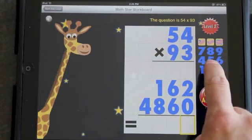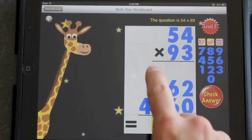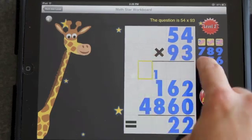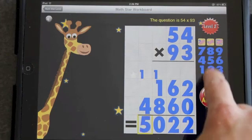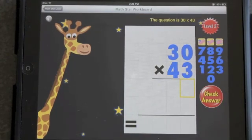Let's add that up. 2. 6 plus 6 is 12: 1, 2. 1 plus 1 plus 8 is 10: 1, 0. 1 plus 4 is 5. And that's been an introduction to MathStar.